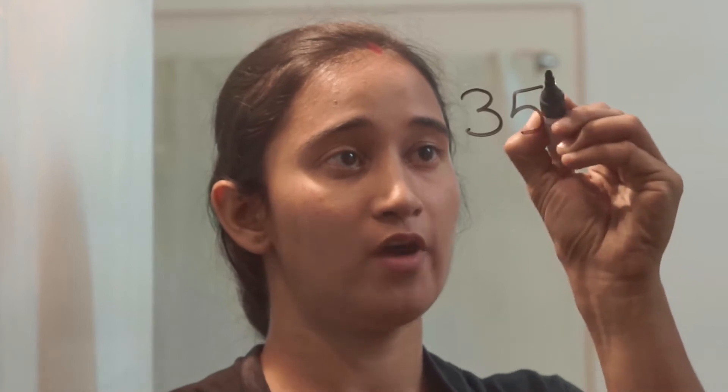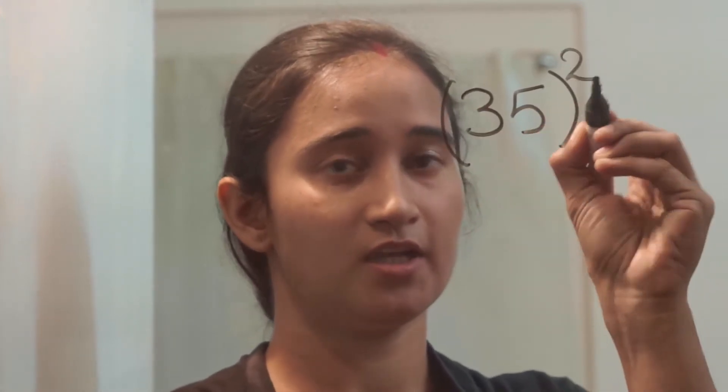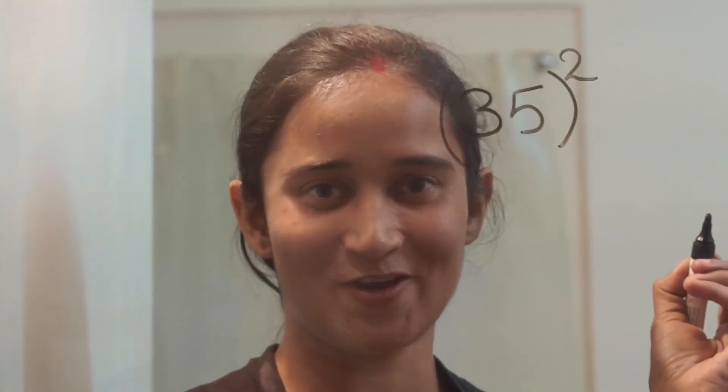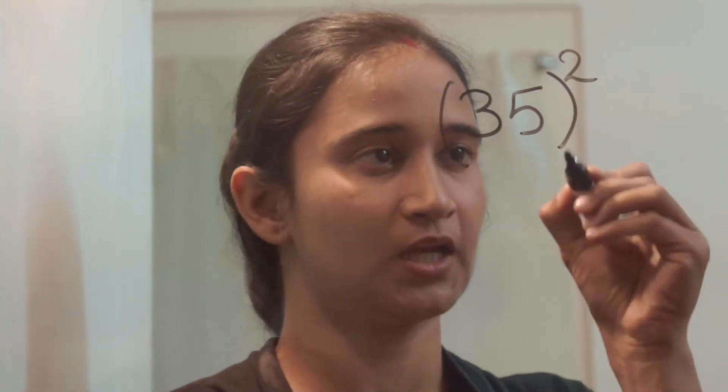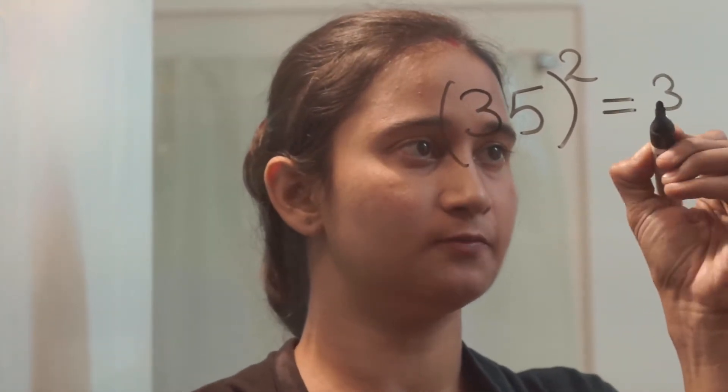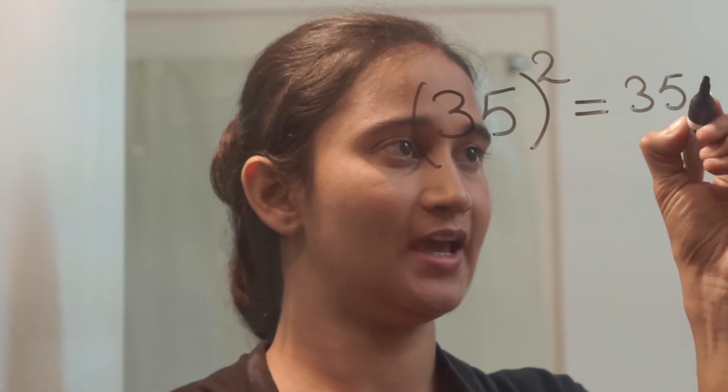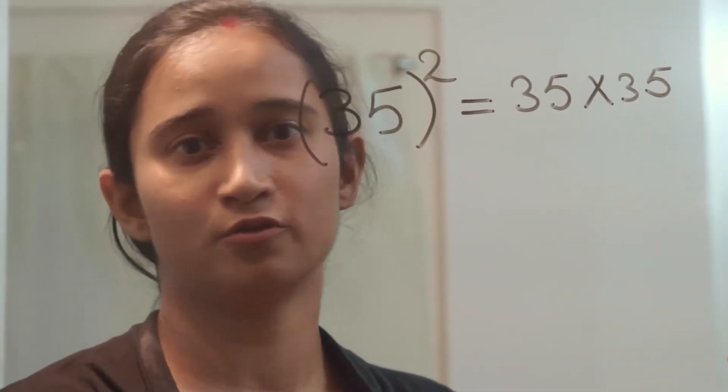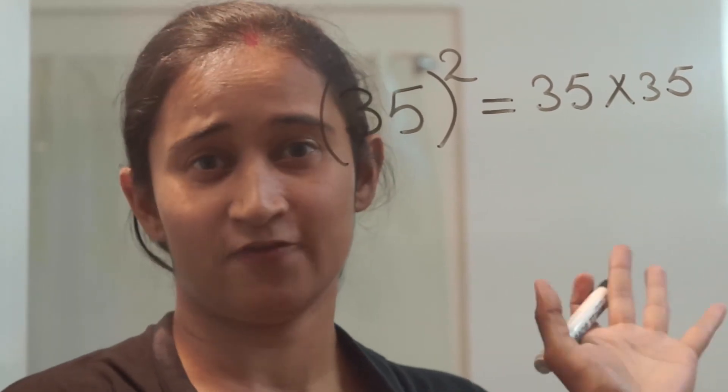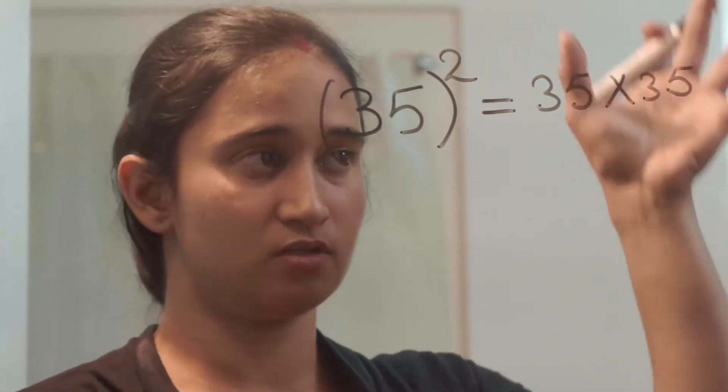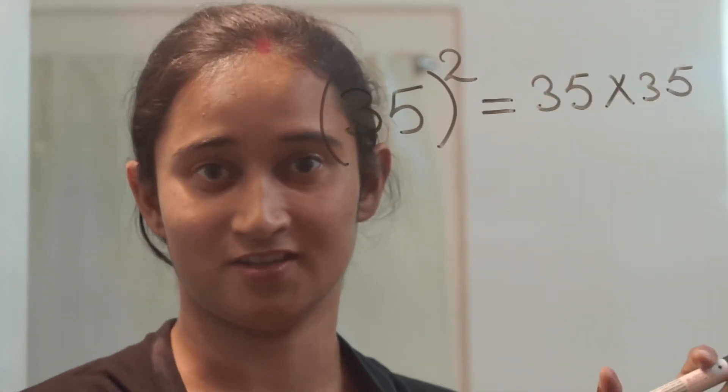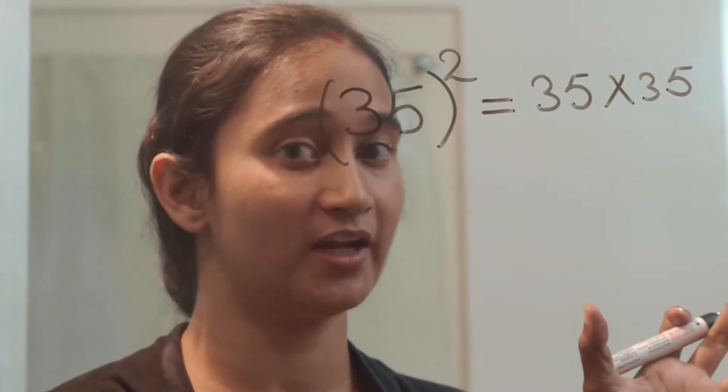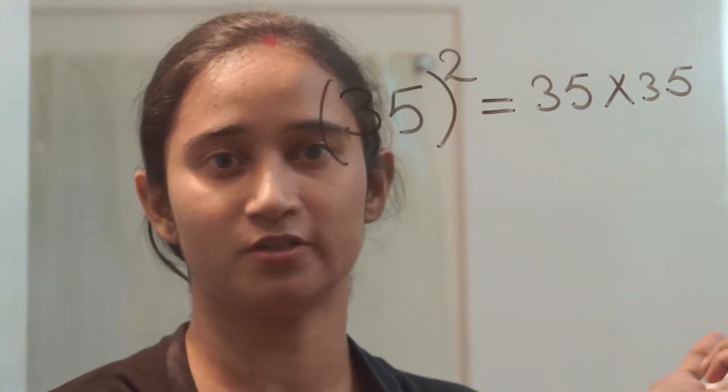So if I say kids, let's start 35 square. Let me say 35 square. How do we do 35 into 35? Yes. But I don't want to do column method. I am really fed up of column method, doing so long calculation. I want to do it quickly. So how do we do it?